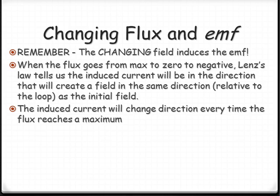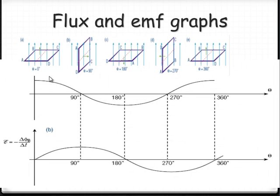Let's look at some diagrams that will help explain what we've just said. Relating the coil position to graphs of flux and the corresponding EMF: we've got maximum flux, then zero flux, then negative maximum flux because it's now 180 degrees the other way, back to zero flux, and then maximum flux again. We get this cyclic motion and it will repeat as it rotates again.